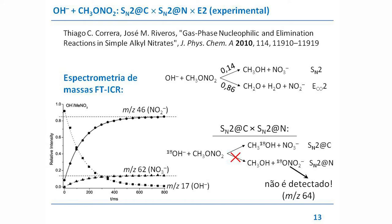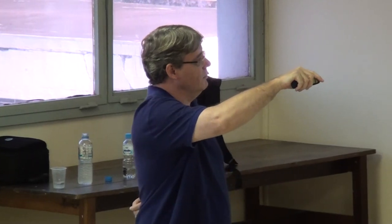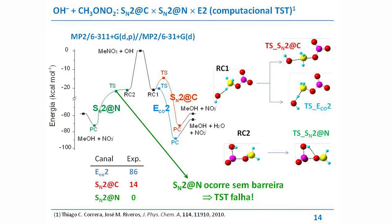O Ribeiro e o Tiago conseguem distinguir, pois na reação de SN2 podemos ter a formação de nitrato via ataque no carbono ou via ataque no nitrogênio. Se utilizarmos oxigênio marcado isotopicamente — oxigênio 18 — no carbono, o oxigênio 18 vai ficar incorporado ao metanol; no nitrogênio, vai ficar incorporado ao nitrato. Como as massas são diferentes — 62 e 64 — e no experimento não foi detectada nenhuma massa 64, a conclusão é que o caminho SN2 no nitrogênio não acontece.